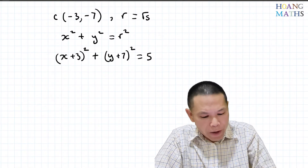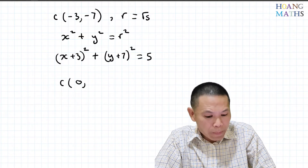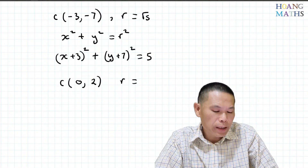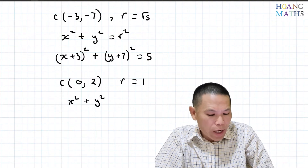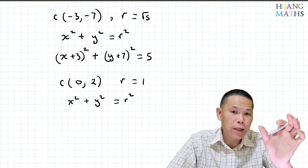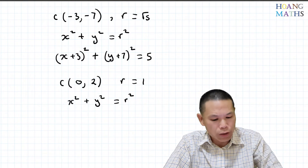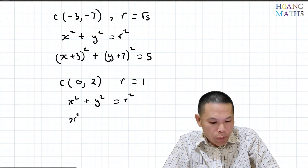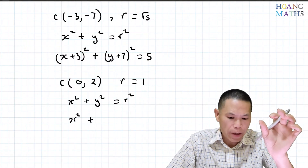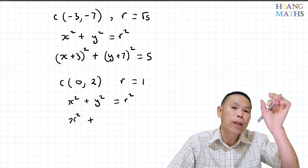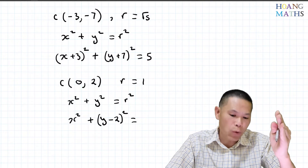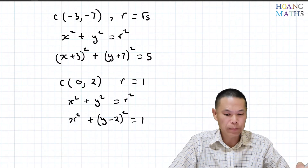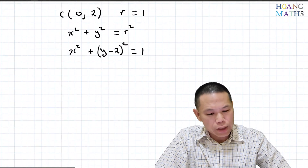Let's say center is (0, 2) and radius is 1. Starting from x squared plus y squared equals r squared: for x, the value doesn't move — still zero — so it stays x squared. For y, the circle moved two units up, so it becomes (y minus 2) squared. The radius squared is 1 squared equals 1.